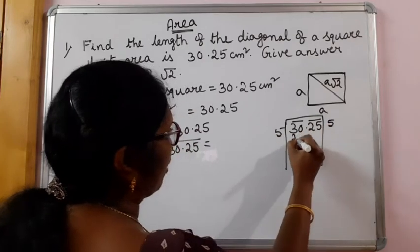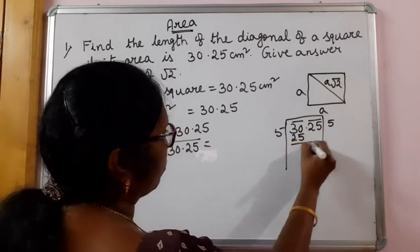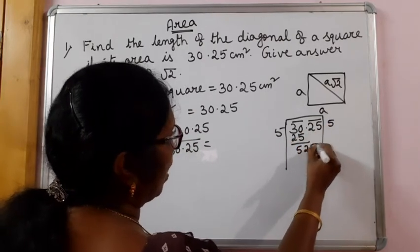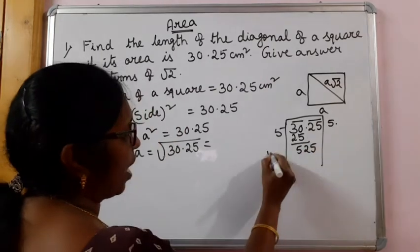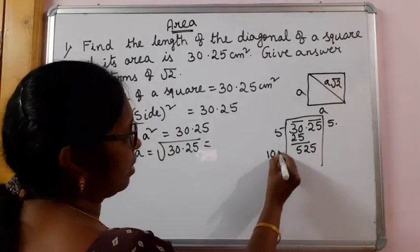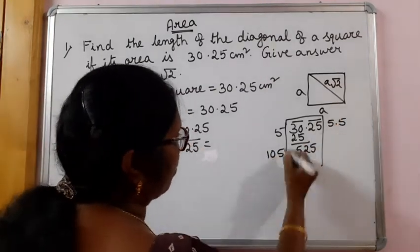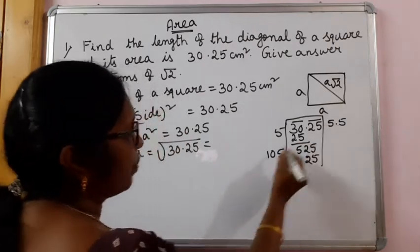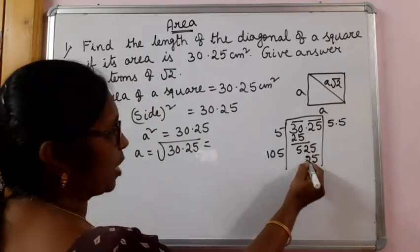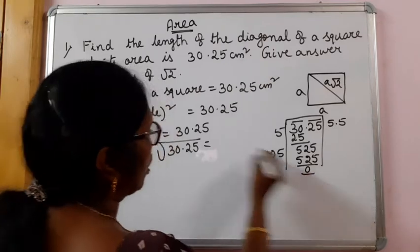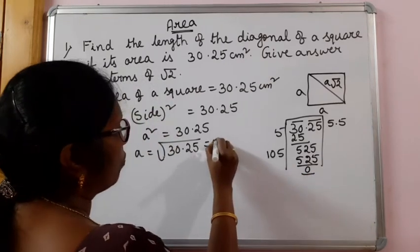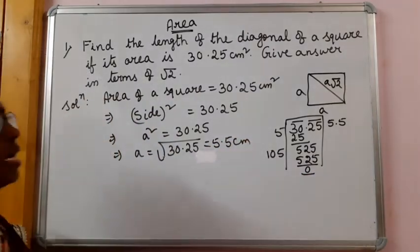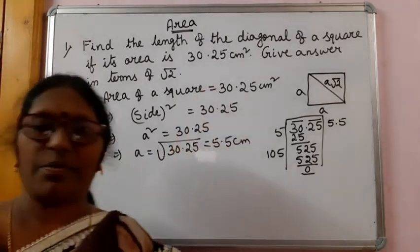Working out the square root: 5 — 5 is there, 25, 5 left over. After decimal: 2, 5 — put decimal, 5. 2 is a 10; putting 5: 5 times 5 is 25, 250 is there, 250 is there, 0 plus 251 is there — 5. So we get 5.5. Therefore the side of the square is 5.5 cm.